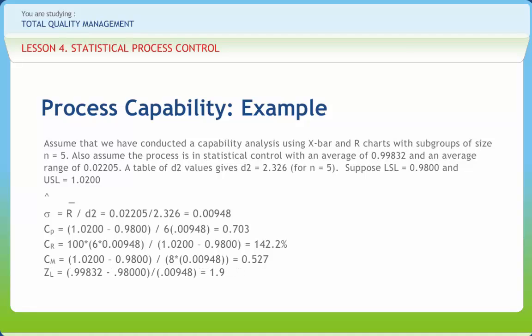Zl equals 1.9. This should be at least plus 3, and this value indicates that approximately 2.9% of the product will be undersized.